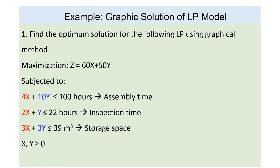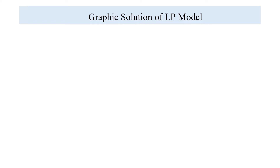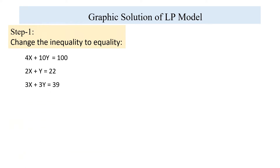The problem is to maximize Z equals 60x plus 50y, subjected to the constraints: 4x plus 10y less than or equal to 100 hours (assembly time); 2x plus y less than or equal to 22 hours (inspection time); and 3x plus 3y less than or equal to 39 cubic meters (storage space). Both x and y are greater than or equal to zero (non-negativity). Using the first step, we convert each inequality constraint to equality.